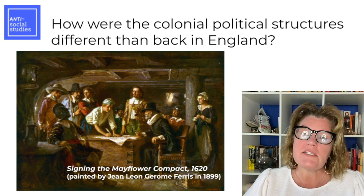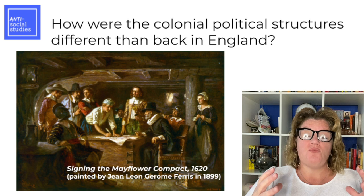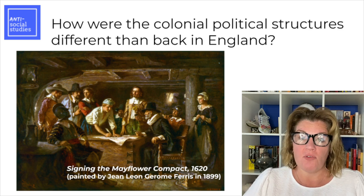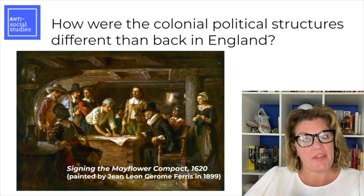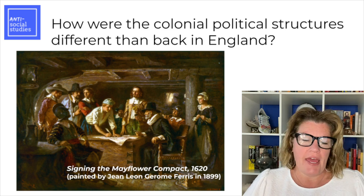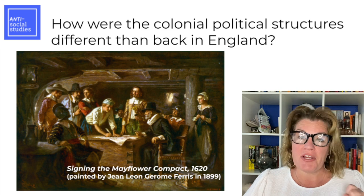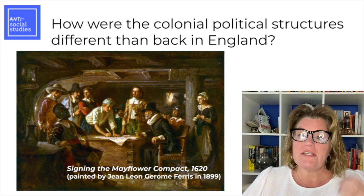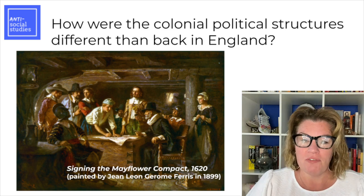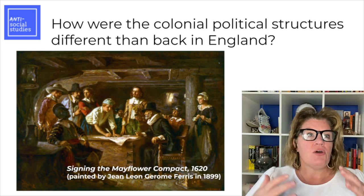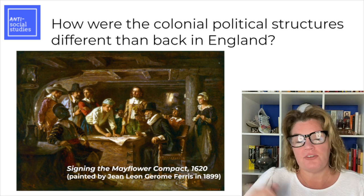Politically, what is different about the American colonies' political structure compared to back home in Britain? Think about the way Americans governed themselves — what was unique about governmental systems in Virginia and Massachusetts? And keep in mind that the next big thing coming is the American Revolution. So what is it that changes from 1607 to 1754 that puts colonists in the mindset of breaking up with their overlords?